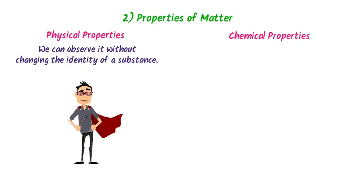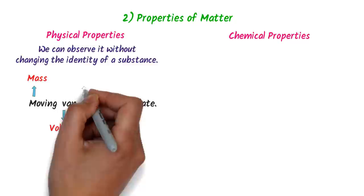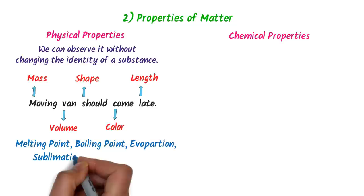The trick is: 'Moving when should come late.' Here M stands for mass, V stands for volume, S stands for shape, C stands for color, and L stands for length. Also remember that all physical changes like melting point, boiling point, evaporation, sublimation, and condensation are physical properties.